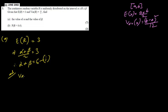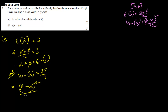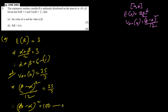The variance equals 25/3, which means (beta − alpha)² / 12 = 25/3. Therefore, (beta − alpha)² equals (25/3) × 12, which is 100. This gives us equation 2.